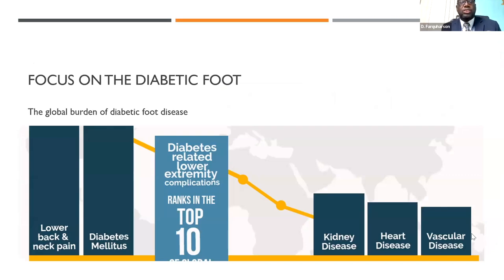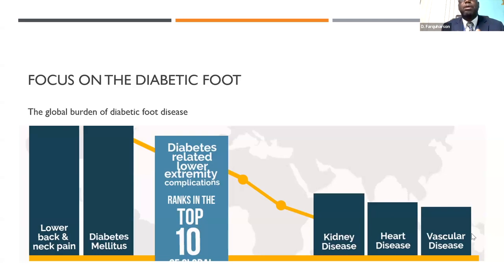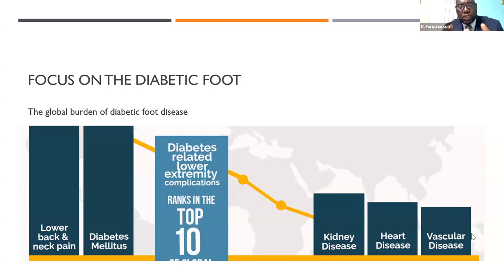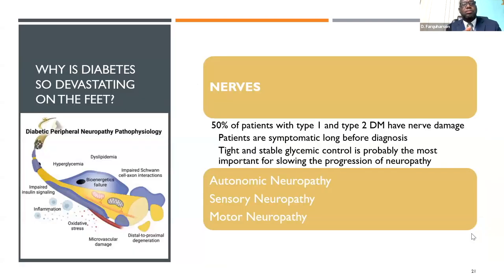Diabetes ranks in the top 10 globally for causing disability. Not everybody dies, but many become disabled through amputation or other morbidities. Diabetes is related to the top 10 causes of disability across the world.